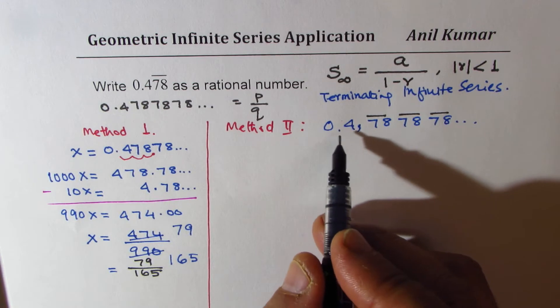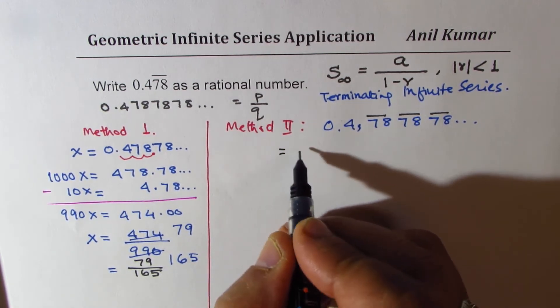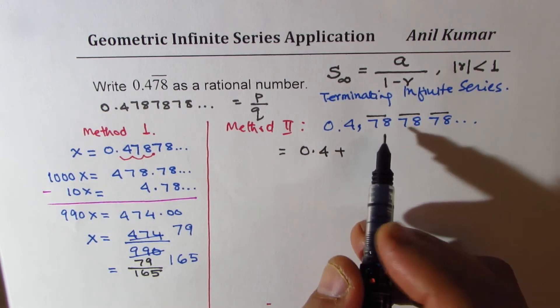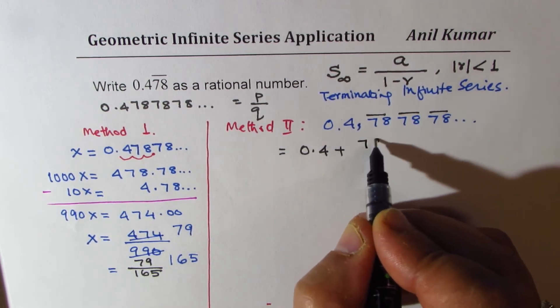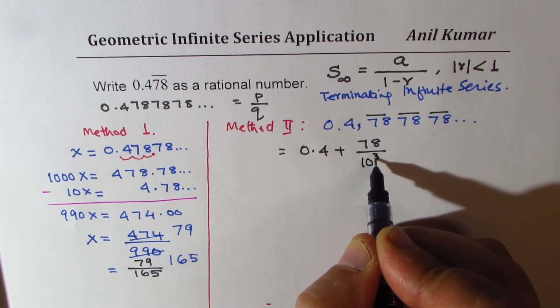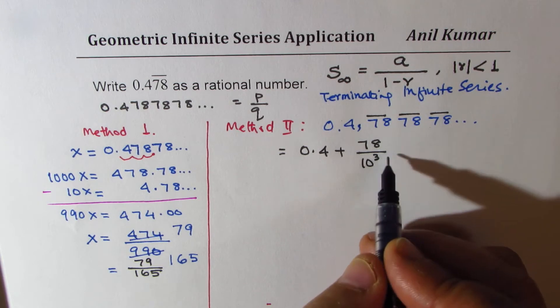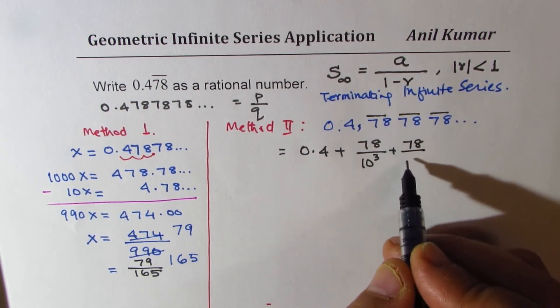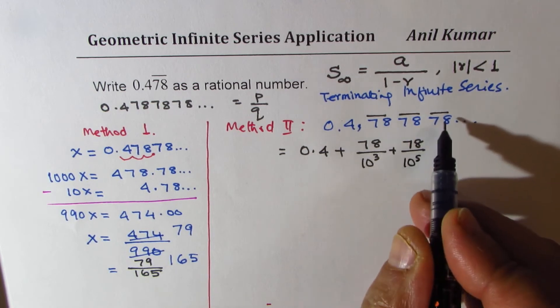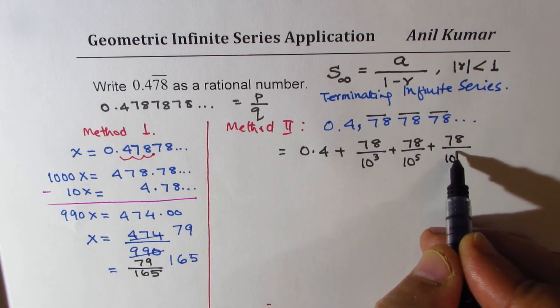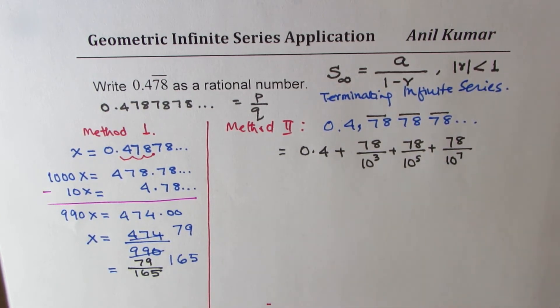We can say that the first number is just 0.4, and to this we add 78 over 1000, which is 10 to the power of 3. The other 78 could be written as 78 divided by 10 to the power of 5, and this 78 could be written as 78 divided by 10 to the power of 7. Is that clear?